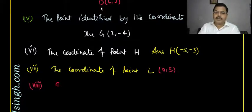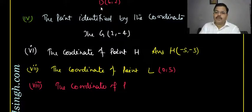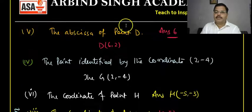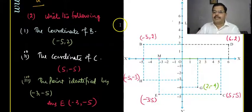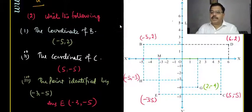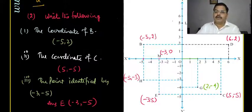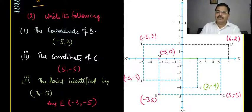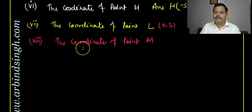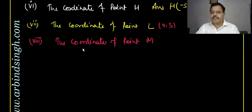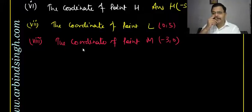The eighth question asks for the coordinate of point M. M lies on the negative x-axis at x = -3, and since it is on the x-axis the y-coordinate is zero. So the coordinate of M is (-3, 0). These are the questions from exercise 3.2.